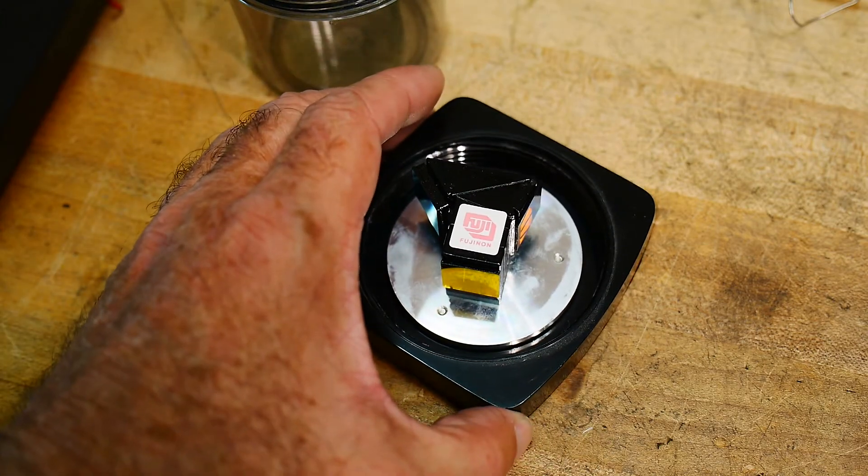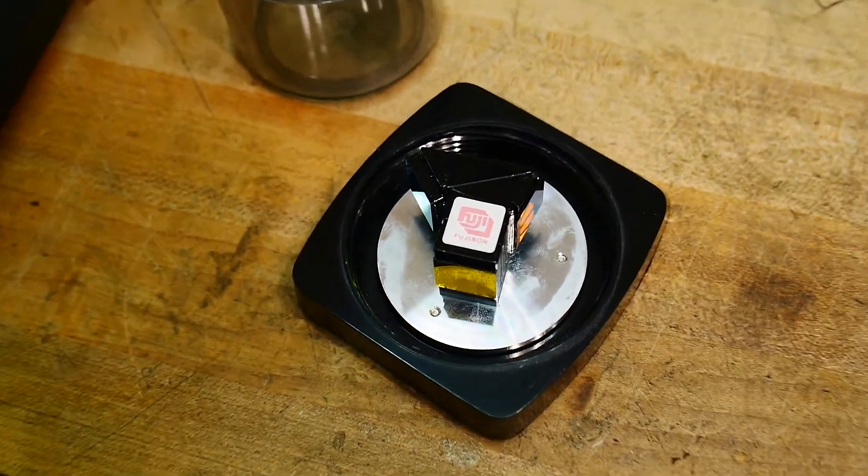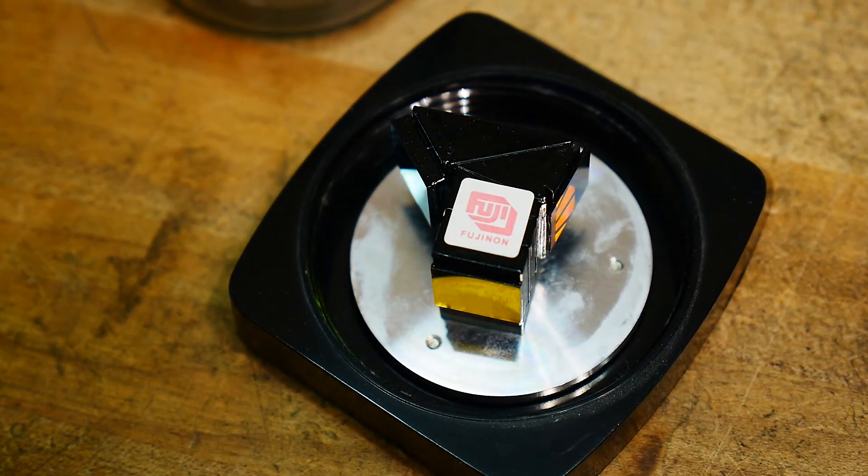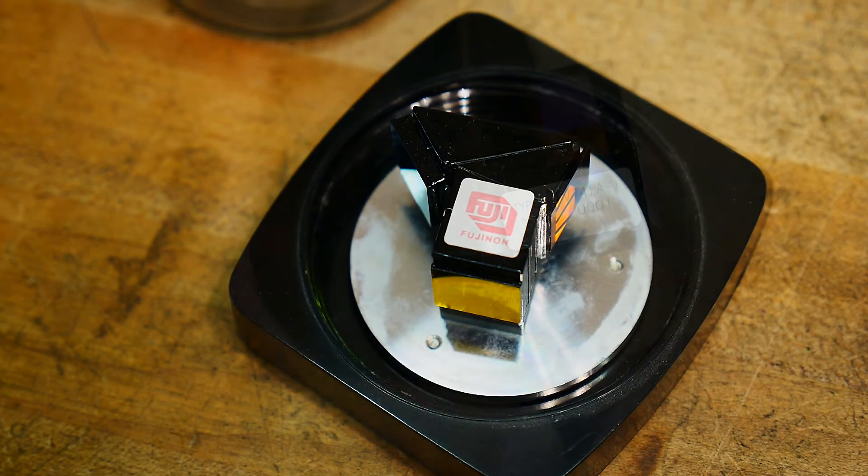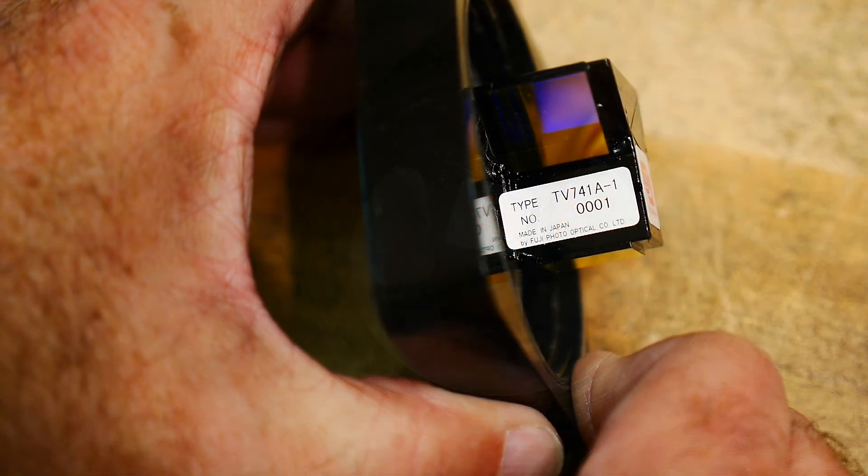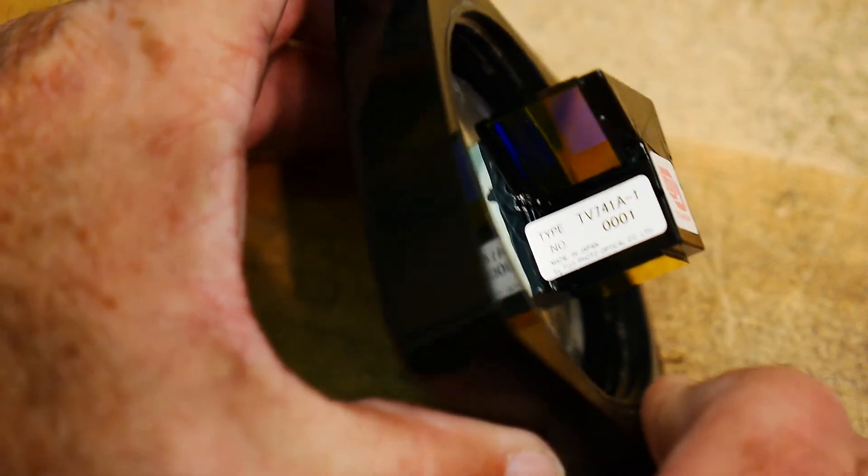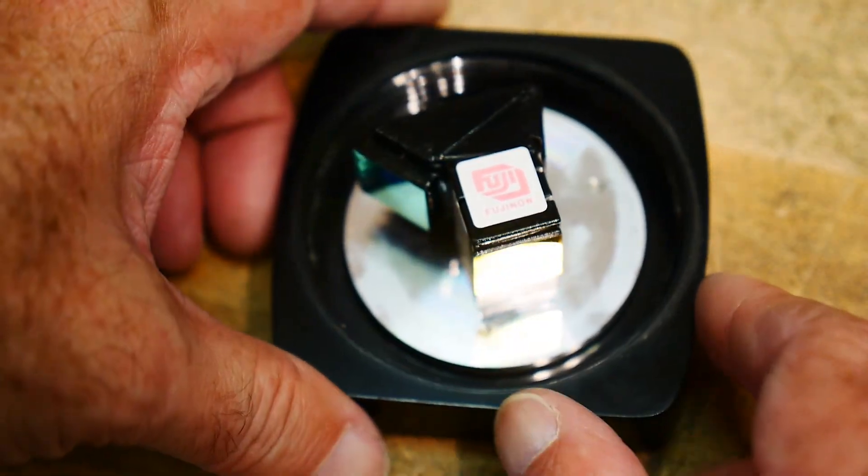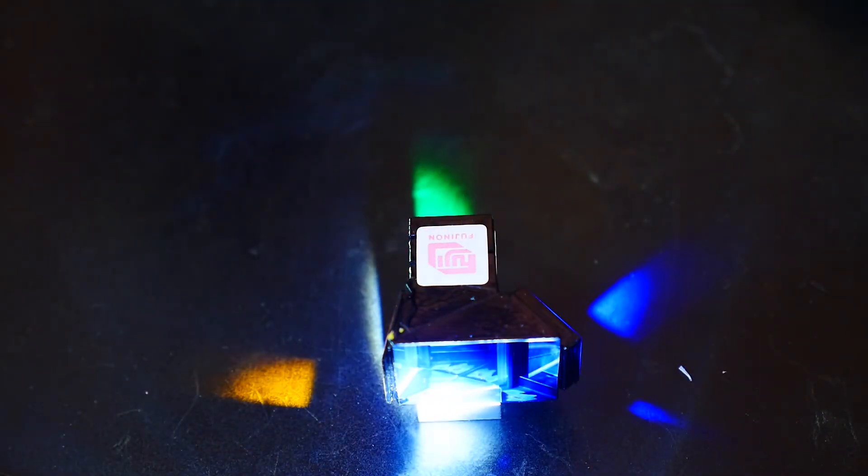And this is the prism they gave me as a sample, showing that they built these things also because Fuji built cameras. And I don't think we used Fuji, the prism itself. But we did have Fuji build our lenses and do the optical assembly.